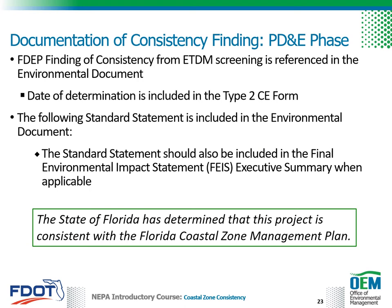During the PD&E phase, FDEP's finding of consistency from the ETDM screening is referenced in the environmental document. For a Type 2 categorical exclusion that went through ETDM screening, the finding is referenced in the Type 2 categorical exclusion determination form and the date of determination is identified. The standard statement shown here is also placed in the environmental document. Additionally, the standard statement should also be included in the final environmental impact statement, or FEIS, executive summary when applicable.